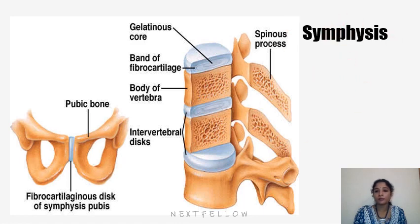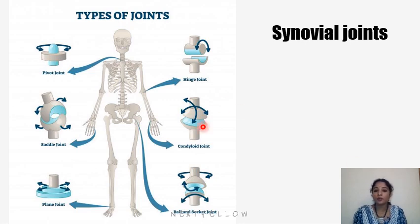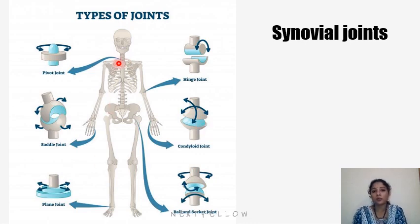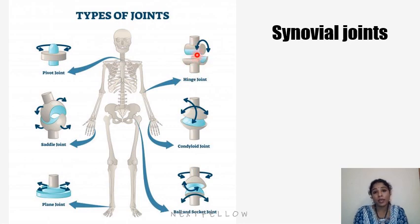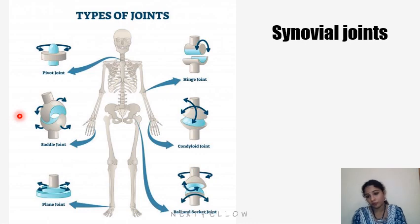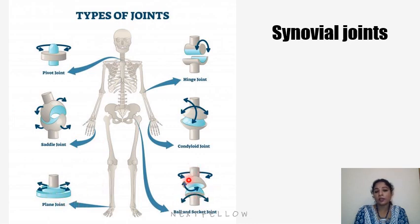Freely movable joints — diarthrosis — are synovial joints. Synovial joints can be classified based on the axis of movement: uniaxial joints where movement happens in a single axis (e.g., hinge joint), biaxial joints where movement happens in two planes, and multiaxial joints where movement happens in several planes.